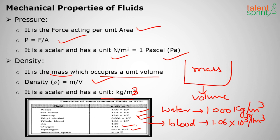Oxygen has a density of 1.43 kg/m³, hydrogen 9.0 × 10⁻² kg/m³, and space approximately 10⁻²⁰ kg/m³. Among these, mercury has the highest density at 13.6 × 10³ kg/m³, because its particle size is larger compared to water.